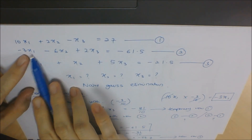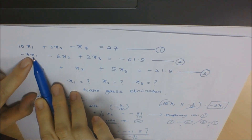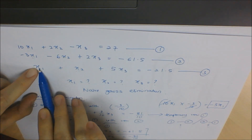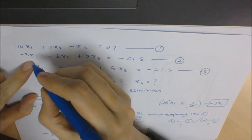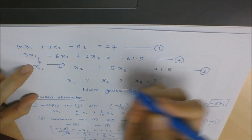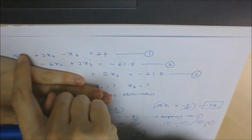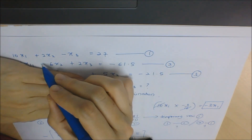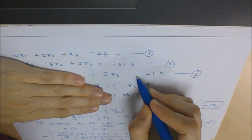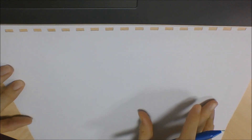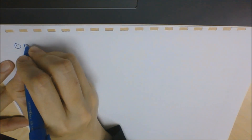Now that we have eliminated the first element from row 2, the next thing to do is eliminate the first element from row 3, and then the second element from row 3. You want to eliminate these step by step, going down and across, so you end up with only the diagonal elements. You will have a new equation for row 2 and a new equation for row 3.